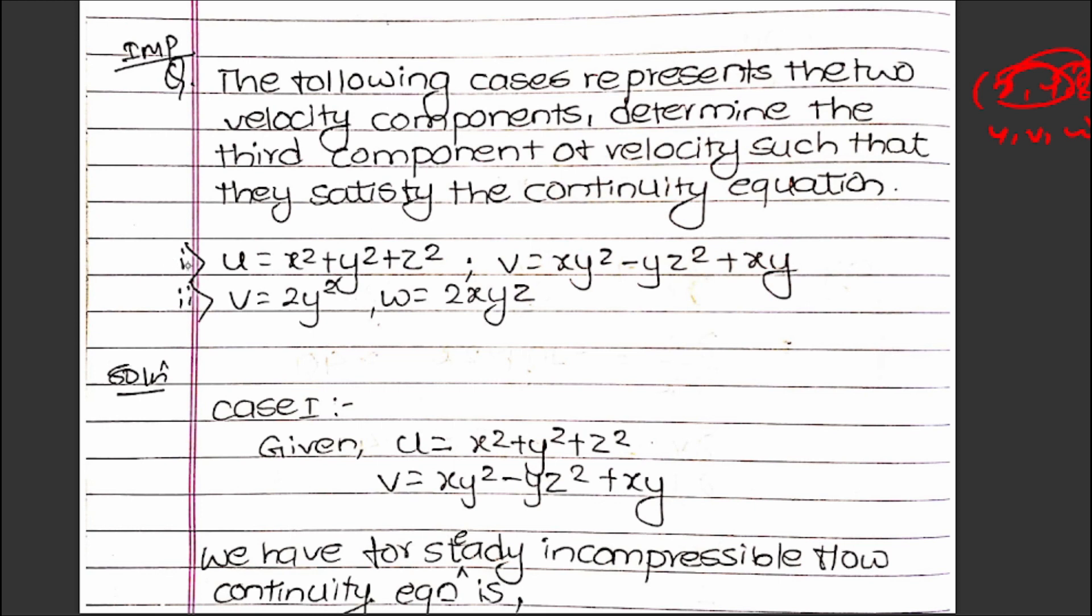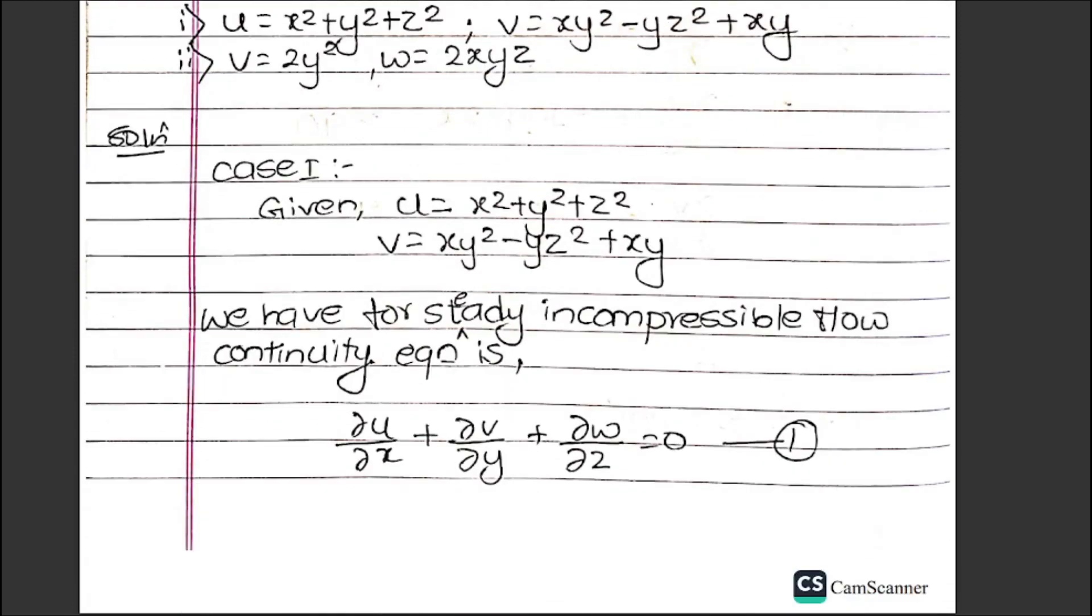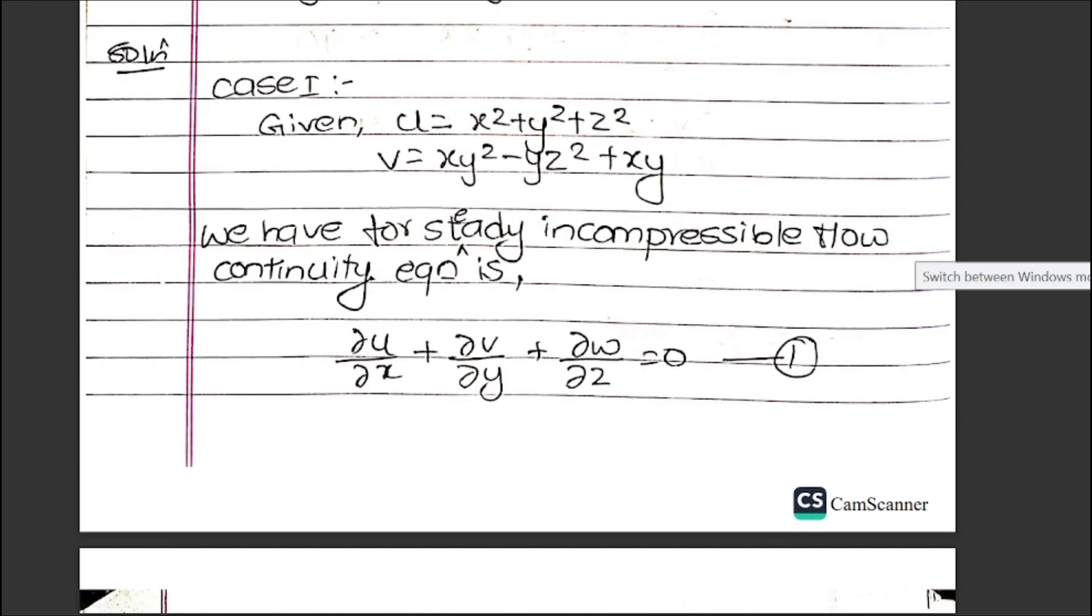Case 1: Given u = x² + y² + z², v = xy² - yz² + xy. We have for steady incompressible flow, the continuity equation.